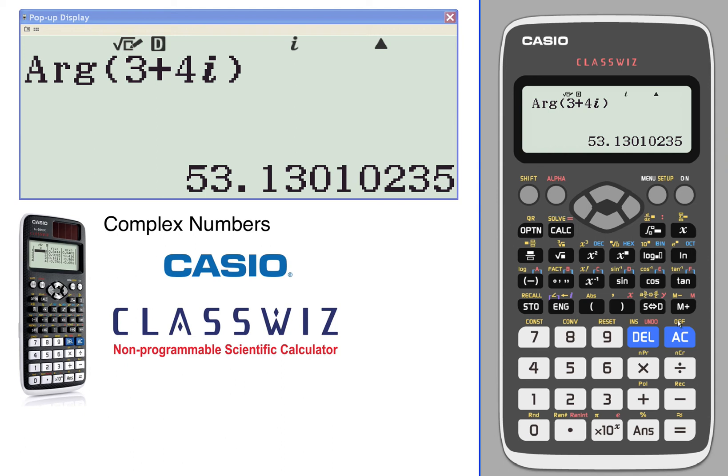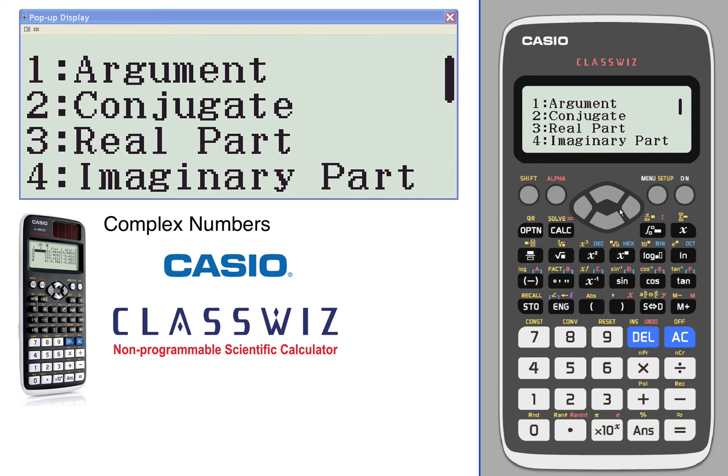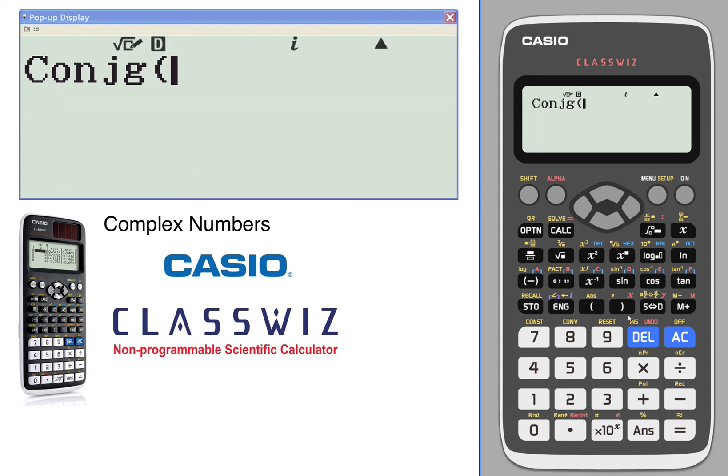Let's find the conjugate of 2 + 4i, just so you can see some of the other different outputs that you can get.